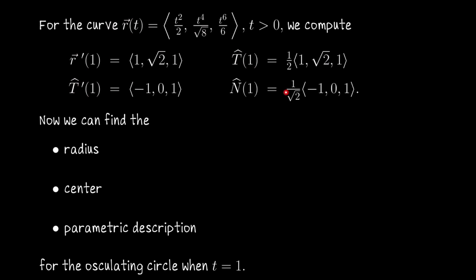We actually computed these in another video, or you could just imagine that I've handed these to you. When time equals 1, the velocity vector R' is the vector (1, √2, 1). By dividing that vector by its own length — dividing the velocity by the speed — we arrive at the unit tangent vector when time equals 1, which is one-half times (1, √2, 1). So the speed of this curve was 2.